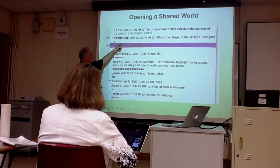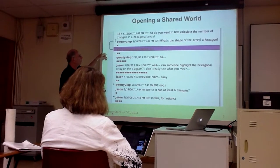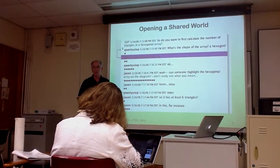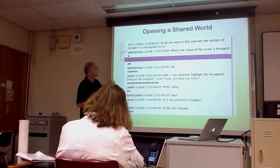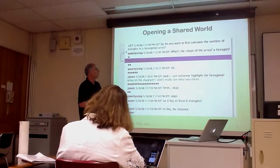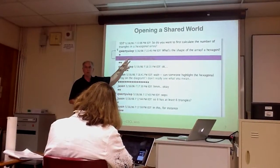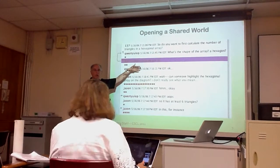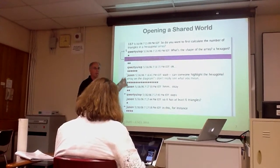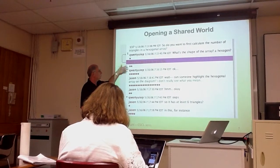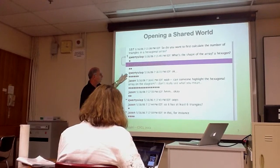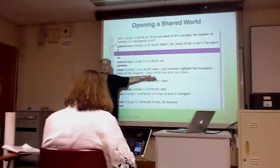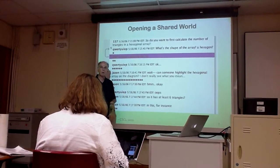Students start asking questions: 'What's the shape of an array?' At first, somebody proposes the mathematical problem — how could we calculate the number of triangles in a bigger hexagonal array? Then there's a sign that something isn't being shared; some understanding isn't intersubjective at this point. Someone asks 'What's the shape of the array?' — essentially asking what the other person has in mind. Then another says 'Wait,' stopping the discussion because he doesn't understand what others are looking at or representing. He asks: 'Can somebody highlight the hexagon in the array?'